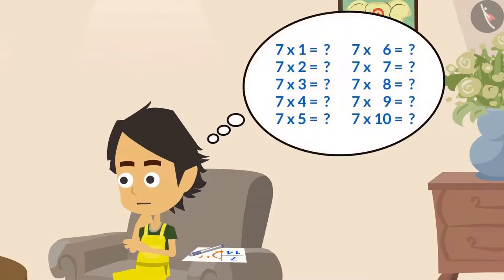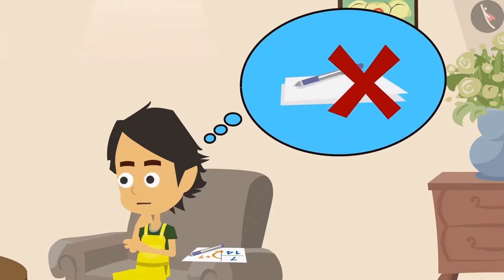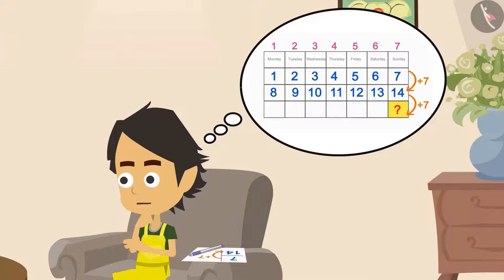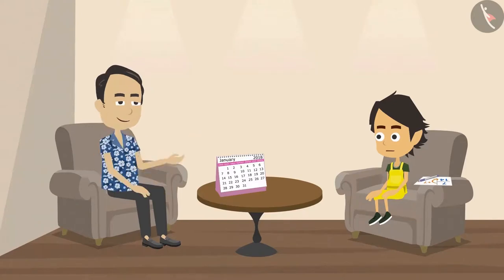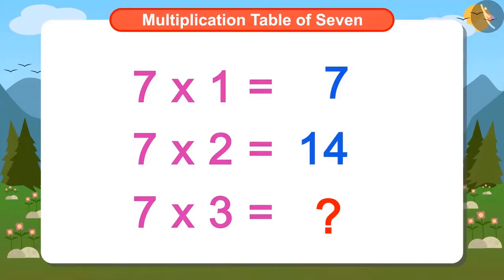I wish I could remember the table of 7 — I would have been able to tell next Sunday's date without the help of paper and pen. Ayushman is thinking. Papa asked why he was unable to answer. Ayushman explained that the first Sunday is 7 multiplied by 1, that is 7th. The second Sunday is 7 multiplied by 2, that is 14th.